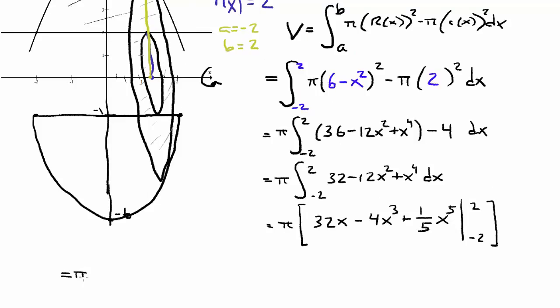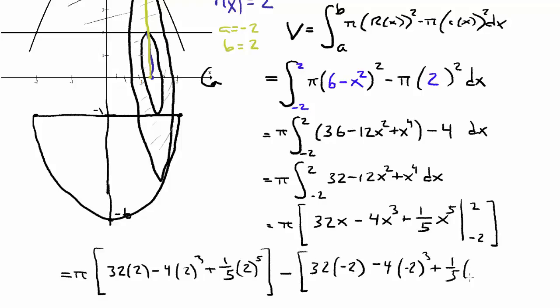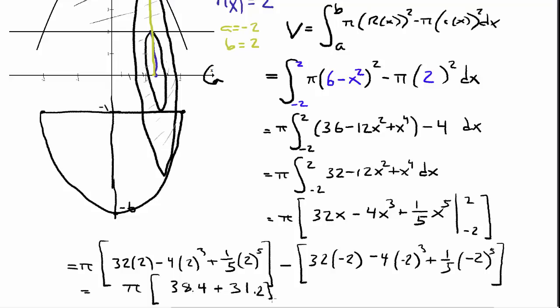I'm going to plug in 2. And then I'm going to minus, and then I'm going to plug in negative 2. I'm going to evaluate both of them, so I'm going to get pi times, and then the first one is 38.4 plus 31.2, and together that makes 348 over 5 pi.